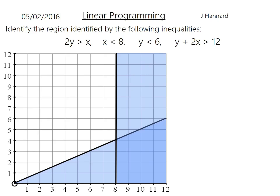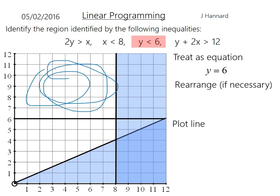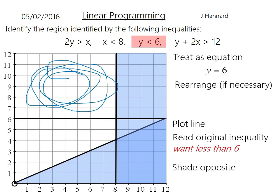Next, y is less than 6. Treat it as an equation: y equals 6. That's just a horizontal line going through y equals 6. Ask ourselves: do we want to be above or below? That's telling me I want to be less than 6, so that means under. So we shade over in this region here above the line. We want less than 6, so we shade the opposite.